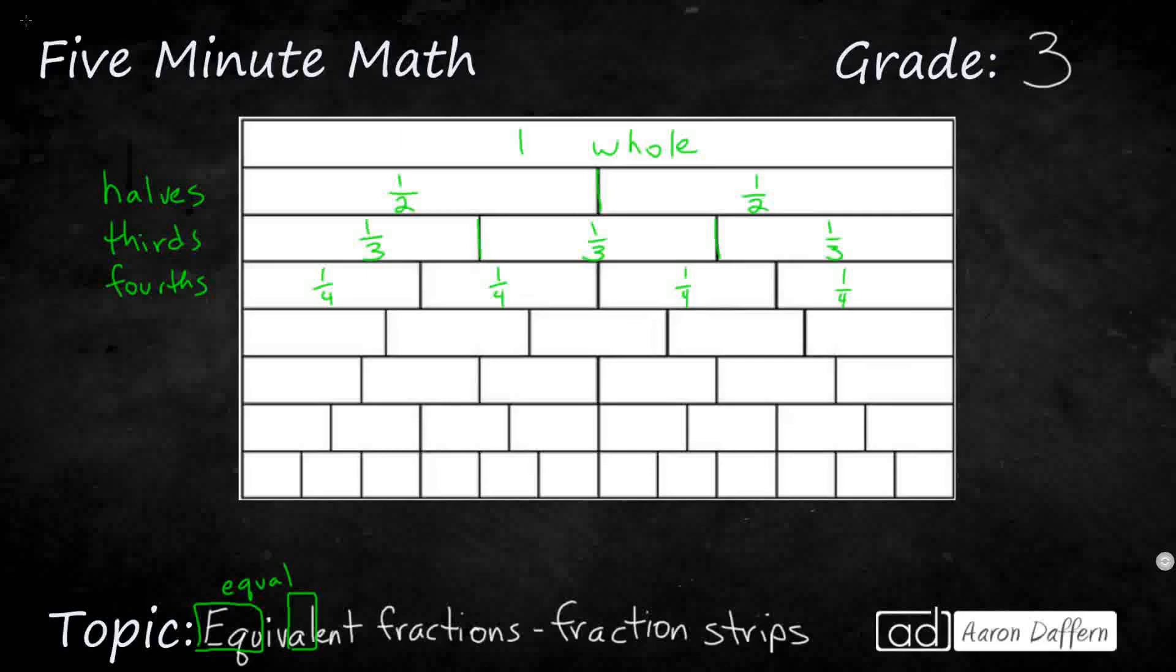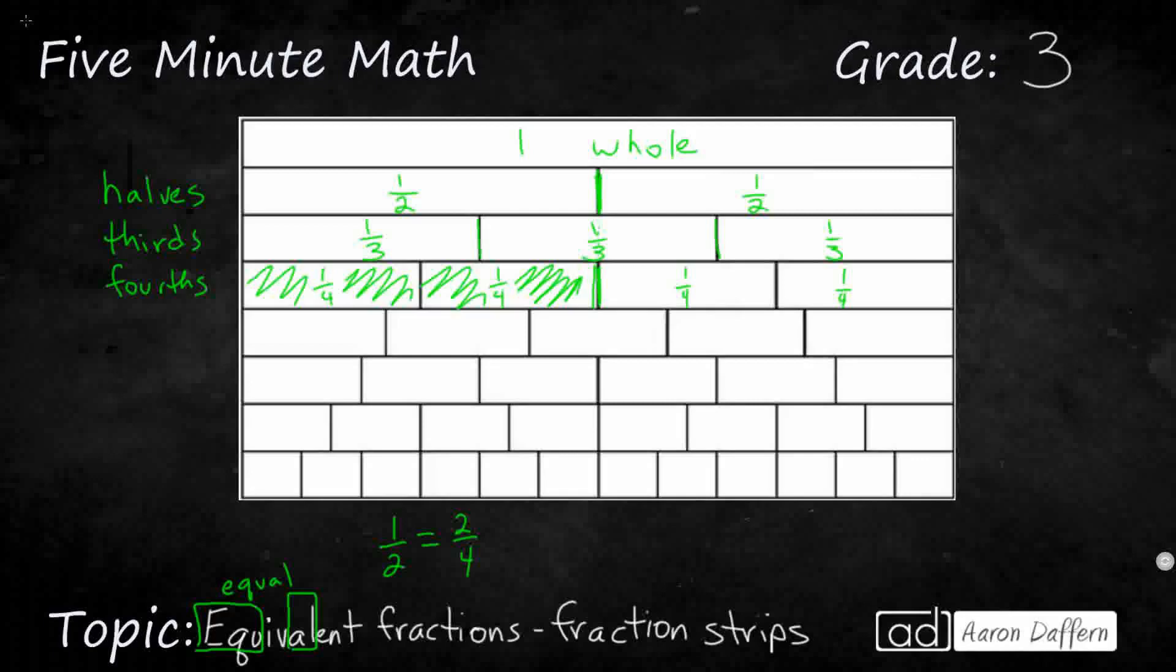Now what we should see here is if I take two fourths, this is a one fourth and a one fourth. Look at that two fourths. It goes to the same distance right here as my one half. So I can say, and I'm going to put that down here, one half is equal to two fourths because using these fraction strips, you can almost draw a connected line right there. Those two go to the same distance. Let's look at the next one.